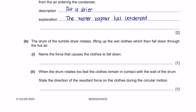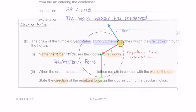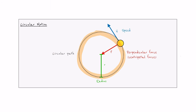Question B: the drum of the tumble dryer rotates, lifting up the wet clothes, which then fall down through the hot air. Part 1: name the force that causes the clothes to fall down — that is gravity. Part 2: when the drum rotates too fast, the clothes remain in contact with the wall of the drum. The clothes are trying to move in a forward direction, and the perpendicular force acts towards the centre of the drum.